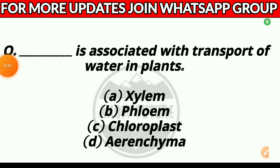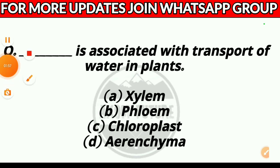Question 18. Which is associated with transport of water in plants? Option A, xylem; Option B, phloem; Option C, chloroplast; or Option D, enzyme. Answer: Option A, xylem.